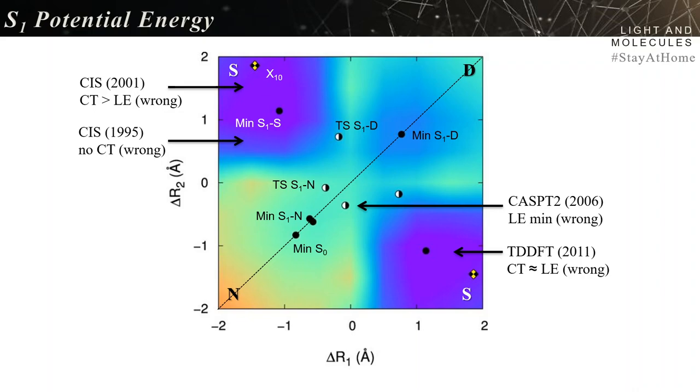In 2011, TDDFT got the CT and the LE at more or less the same energy, and that was wrong. The reason was they used a range-separated functional. Range-separated functionals are always complicated - you have this parameter to control the separation. If you don't really tune it, you can get bad results. If you use a well-tuned parameter you can get good description of the CT, but it wasn't the case there.